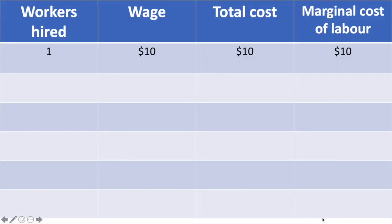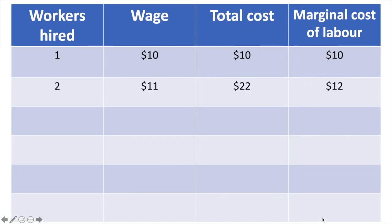If the mining company is looking for employees, they would need to offer a wage to attract the first worker. There may be one person they could get to offer their labour at a wage rate of $10, so their total cost for one unit of labour is $10 and their marginal cost of labour for the first worker is $10. But when they need to hire additional workers, the mining company needs to offer a wage rate of $11. This means they pay the new worker $11 and adjust the first worker's pay upward by $1, resulting in a total cost of $22 and a marginal cost of labour of $12. We get the marginal cost by subtracting the total cost of one worker from the total cost of two workers and dividing by the change in the number of workers — in this case $12 divided by one, giving a marginal cost of $12.